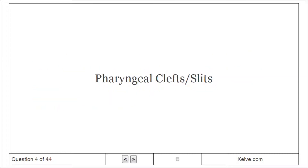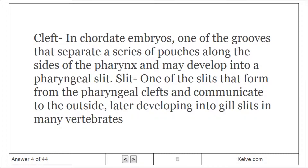Pharyngeal Clefts/Slits: A cleft in chordate embryos — one of the grooves that separate a series of pouches along the sides of the pharynx. May develop into a pharyngeal slit, one of the slits that form from the pharyngeal clefts and communicate to the outside, later developing into gill slits in many species.